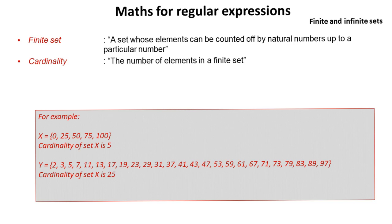We have cardinality. This simply refers to the number of elements in a finite set. For example, here we'd say the set X has a cardinality of five, and set Y has a cardinality of 25. It has 25 elements.